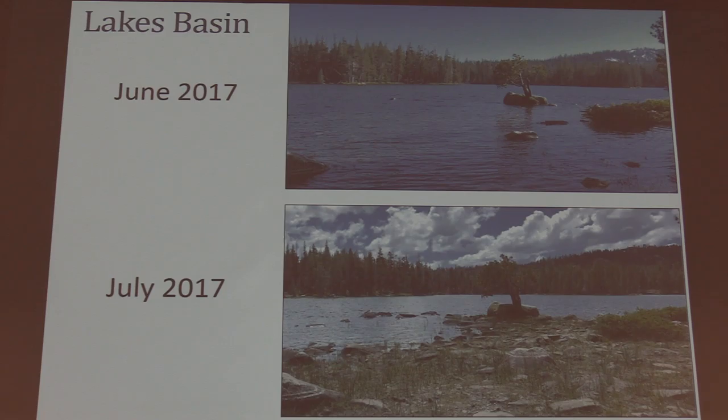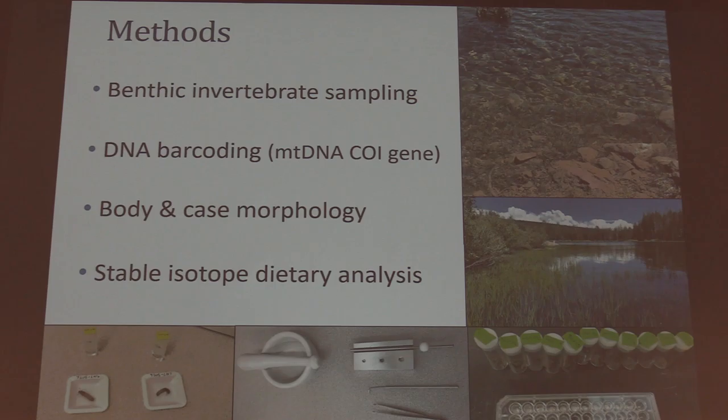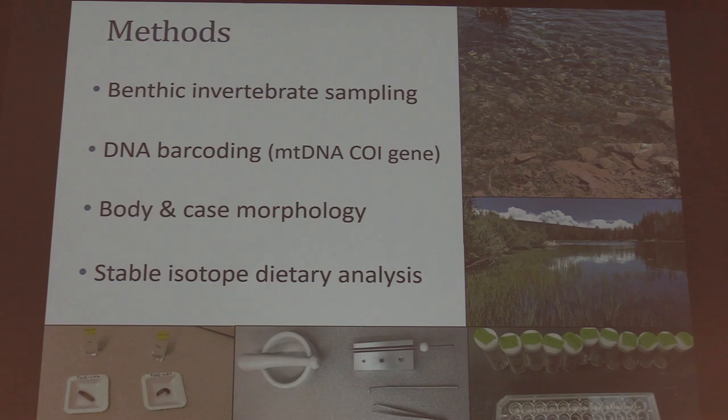I did timed benthic macroinvertebrate sampling on substrates like cobble, bedrock, and boulder, in five one-meter-by-meter quadrats. I collected the individuals, put them in ethanol, and brought them back to the lab where I did DNA barcoding focusing on the mitochondrial DNA CO1 gene — which is useful because it's a slow-evolving gene good for telling species apart. I then looked at body and case morphology, and followed that up with stable isotope dietary analysis.